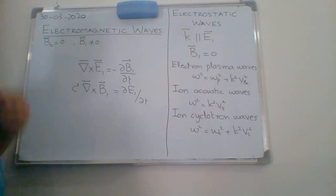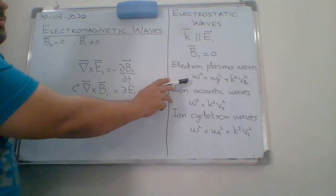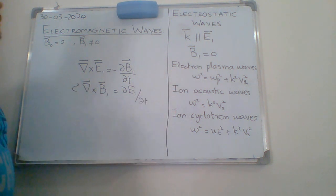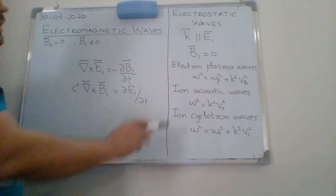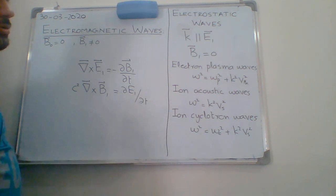By using these conditions we have gone through several possible electrostatic waves that can exist in plasma like electron plasma waves, which has the expression omega p squared plus k squared thermal squared, ion acoustic waves, and ion cyclotron waves. Now we are going to talk today about electromagnetic waves.